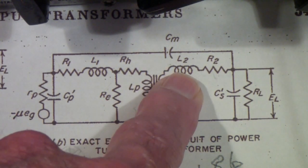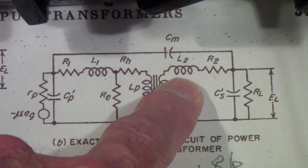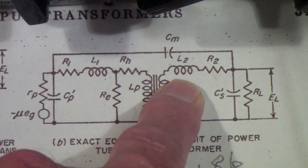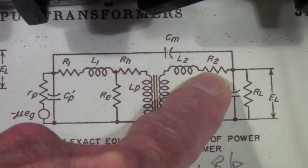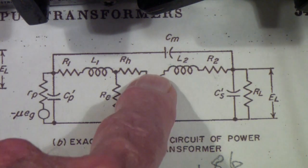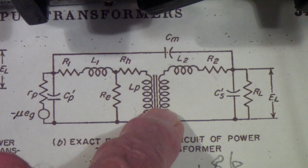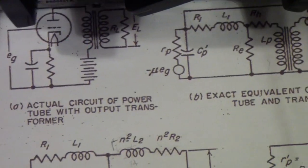The L2 is what is called the leakage inductance in the transformer. We'll talk about that in just a bit. And then R2 is considered to be the loss in the secondary, in other words, the resistance of the secondary, the ohmic resistance of the secondary.